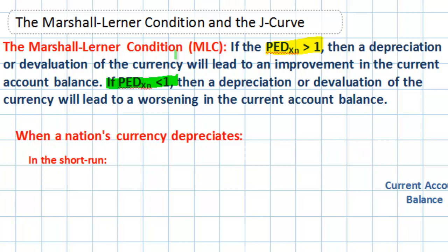The logic behind this is that if export demand is relatively elastic, a weaker currency will lead to a proportionally larger increase in exports, since foreign consumers are highly responsive to the lower prices. Likewise, if import demand is elastic, a slightly weaker currency will lead to a proportionally larger decrease in the quantity demanded of imports. Therefore, if PED is greater than one for exports and imports, a weaker currency will improve a nation's current account balance.